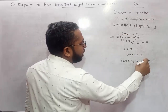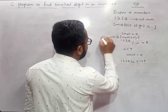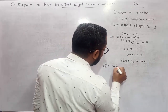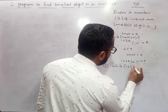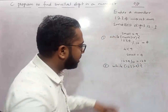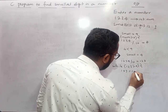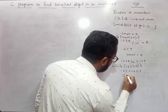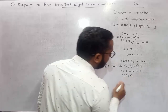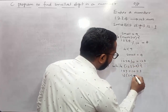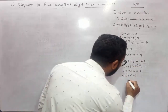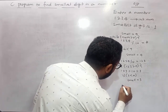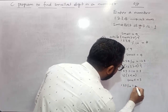In the second iteration, `num` is now 123. While 123 is greater than 0, the condition is true, so we enter the while loop. We compute 123 mod 10 and get 3 as the remainder. We check if 3 is less than `small`, which is 4. Yes, 3 is less than 4, so `small` gets updated to 3. Then we divide 123 by 10 to get 12.